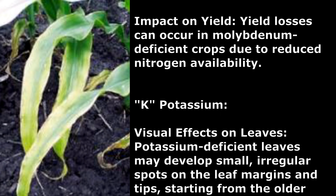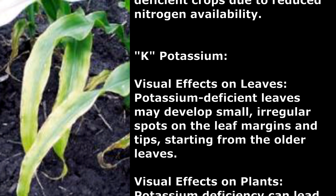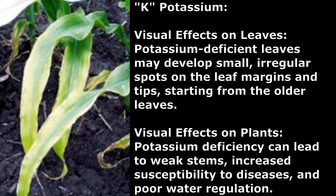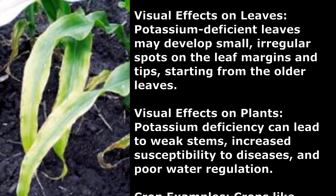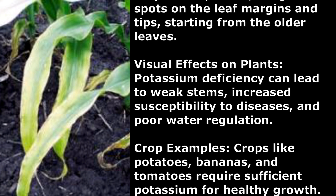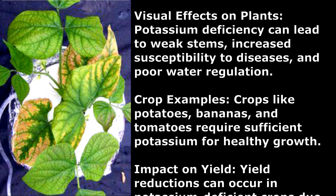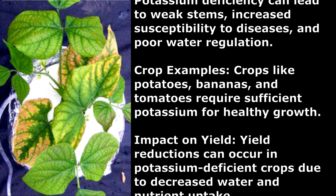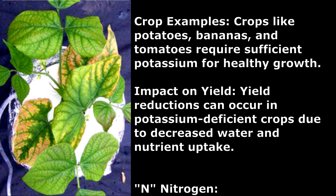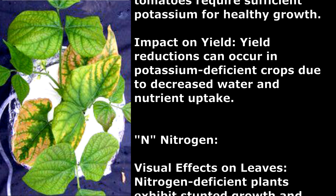Potassium. Visual Effects on Leaves: Potassium-deficient leaves may develop small, irregular spots on the leaf margins and tips, starting from the older leaves. Visual Effects on Plants: Potassium deficiency can lead to weak stems, increased susceptibility to diseases, and poor water regulation. Crop Examples: Crops like potatoes, bananas, and tomatoes require sufficient potassium for healthy growth. Impact on Yield: Yield reductions can occur due to decreased water and nutrient uptake.